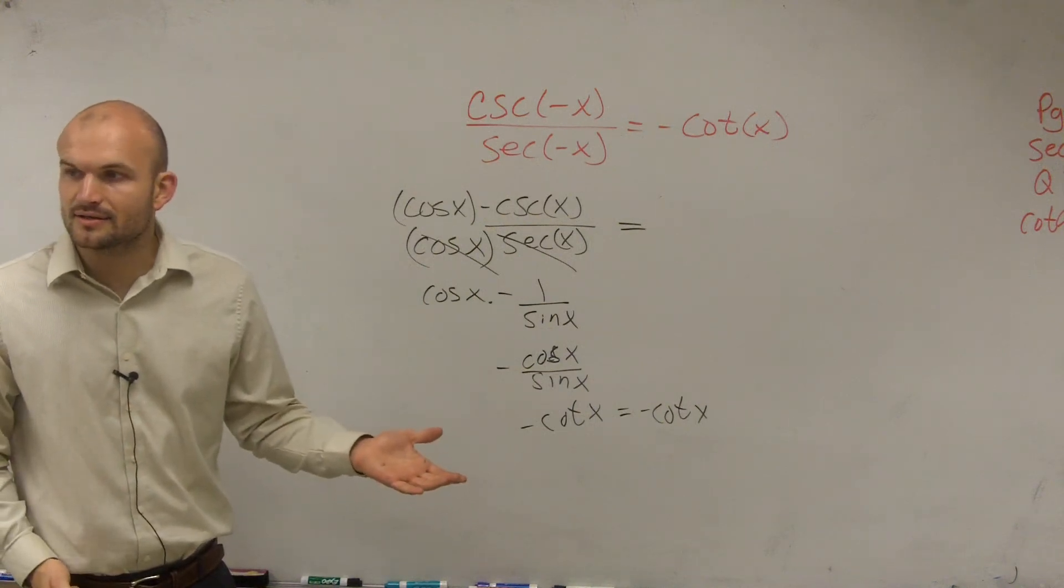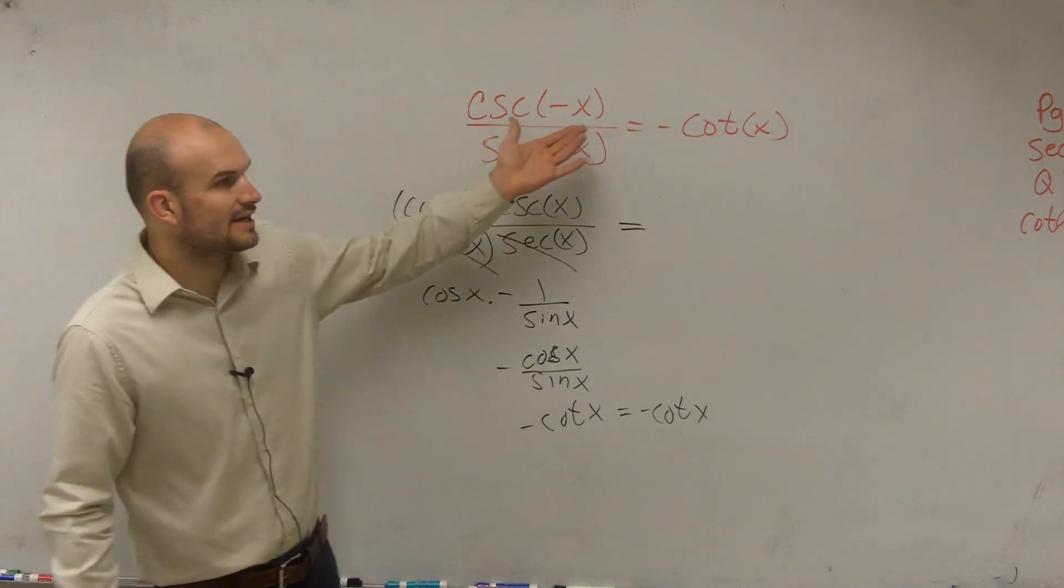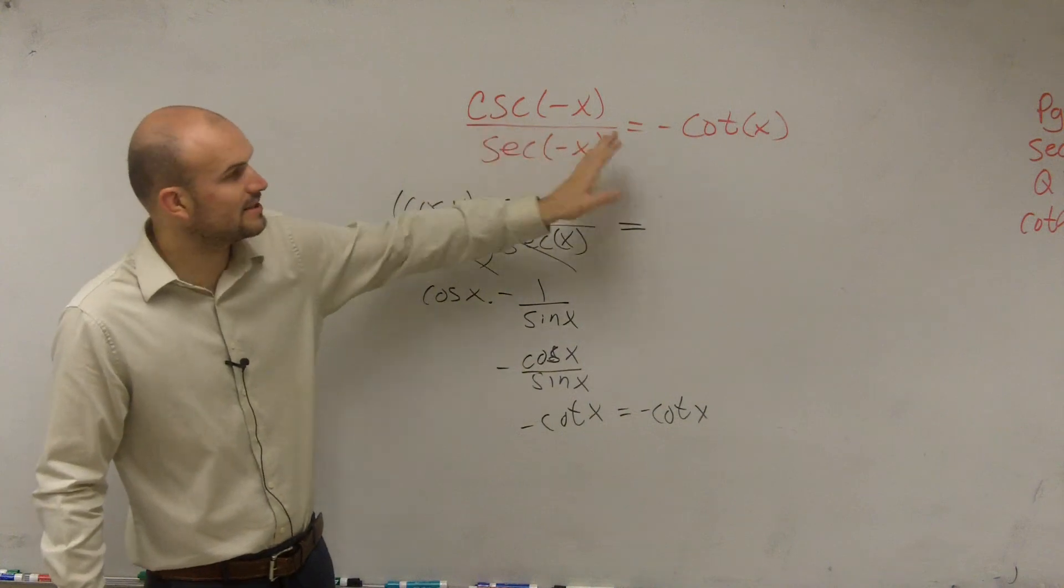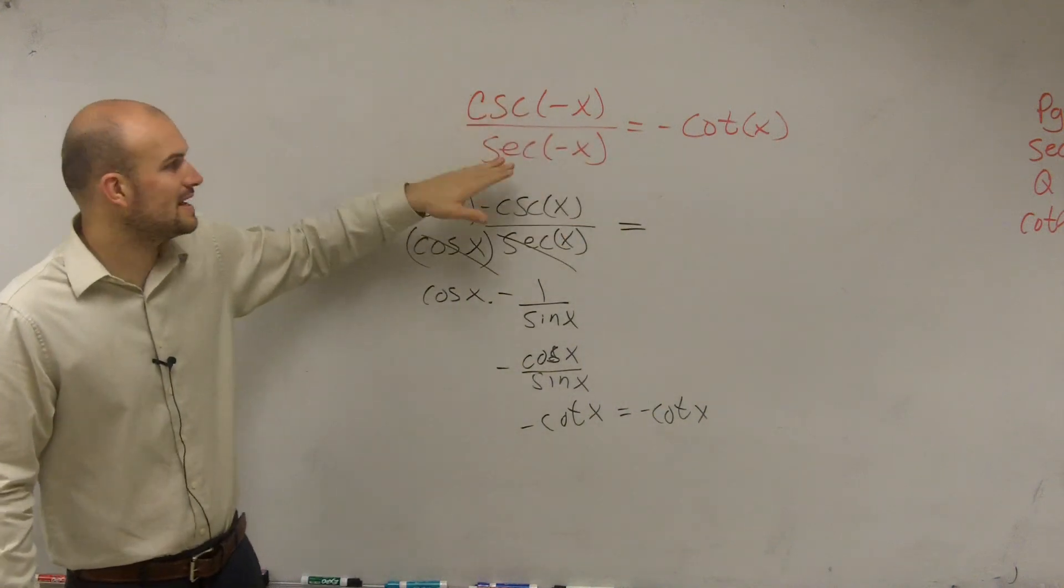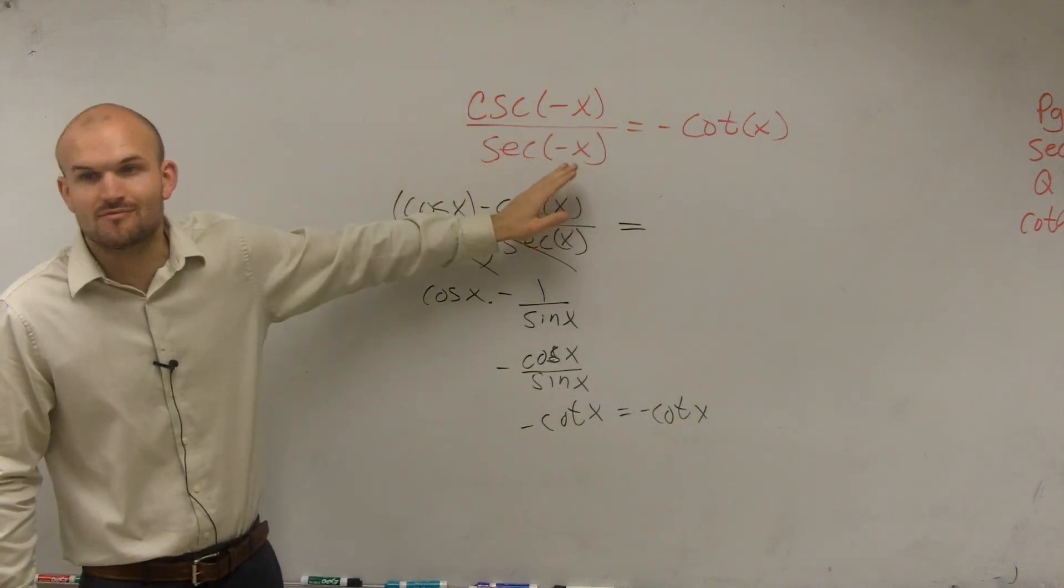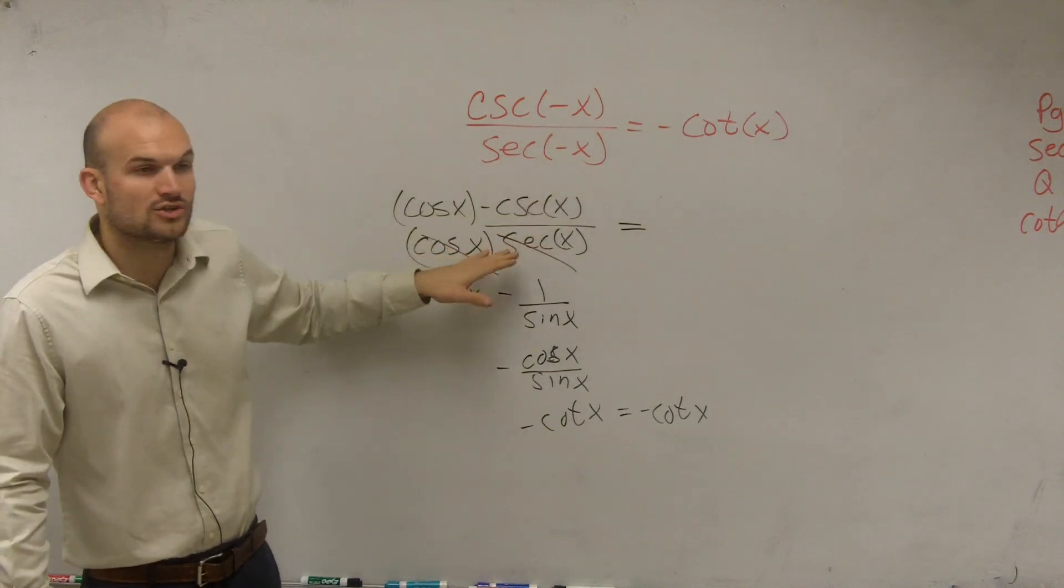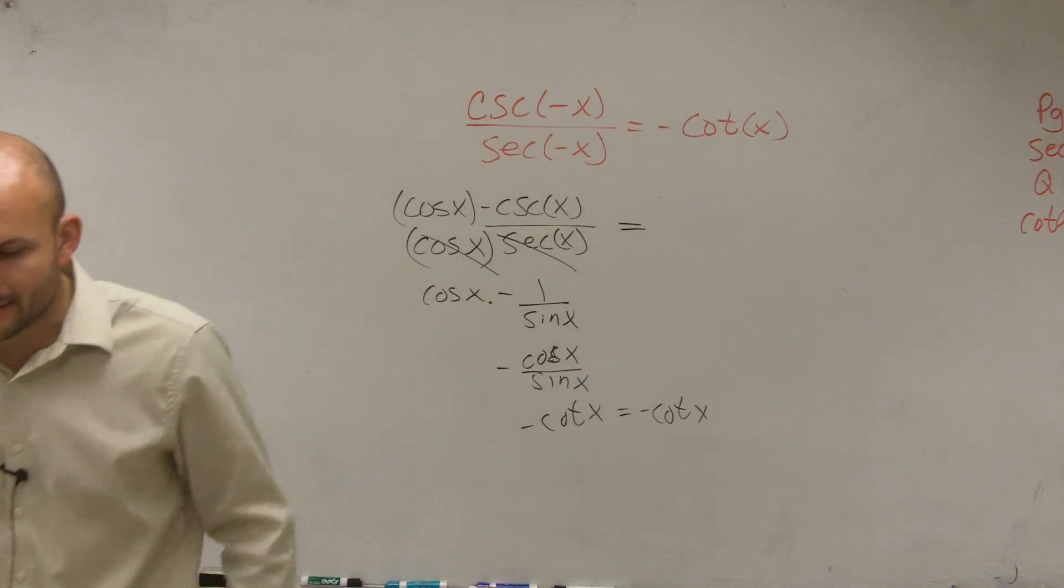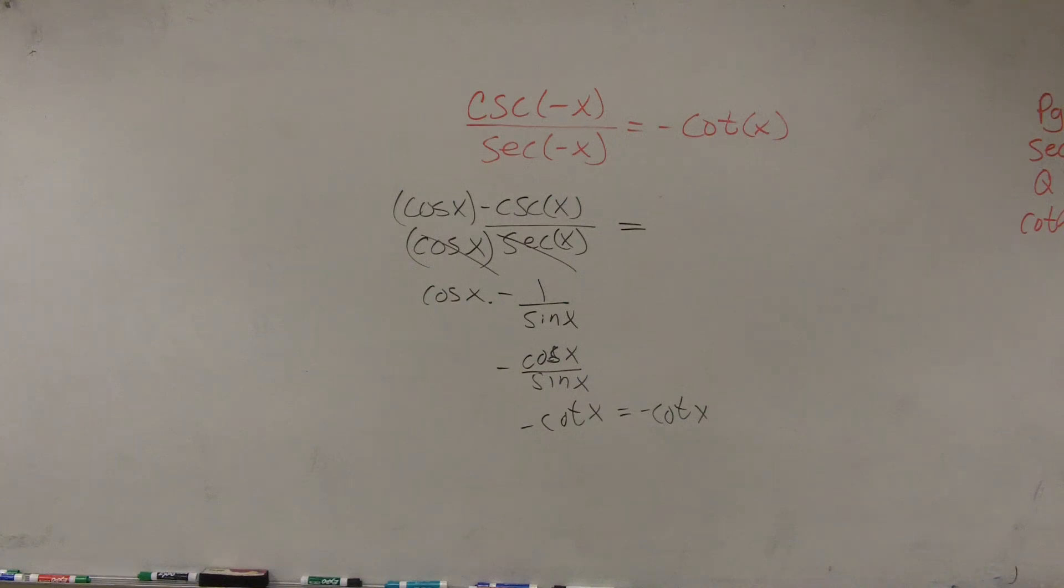So the main important thing, guys, that I worked through this problem is I looked at this was a rational term and this was not. So therefore, I looked at how could I get rid of my secant off my bottom. And I did that by multiplying by the reciprocal. And the next problem we're going to look at, we're going to do the exact same thing.